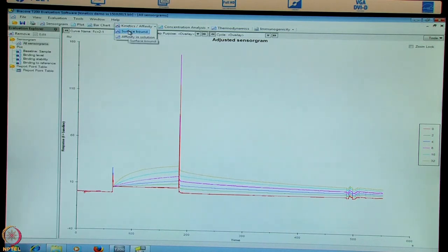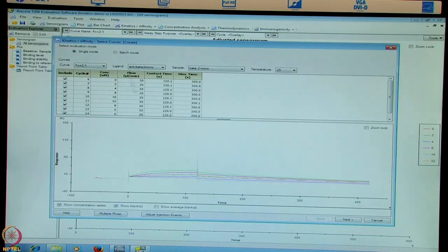Select surface bound. The data is shown here. Here you can see the different cycle numbers, different concentrations of the beta-2M ligand at a flow rate injected of 30 microliters per minute. Contact time of 120 seconds and dissociation time of 300 seconds. We have selected 2 minus 1 surface. The ligand that is immobilized is anti-beta-2 microglobulin. And the sample is beta-2 microglobulin or analyte interaction performed at 25 degrees centigrade.